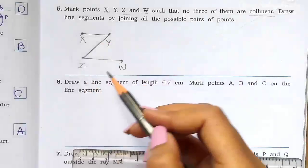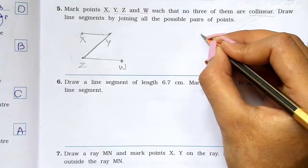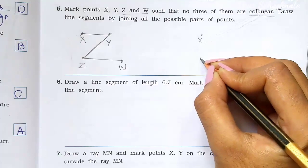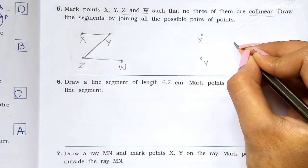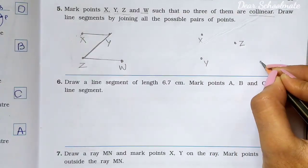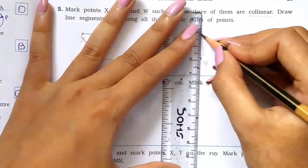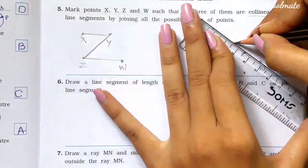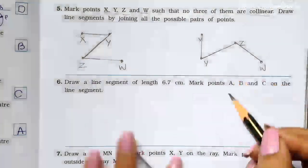Now we place the four points X, Y, Z, W and join them. This way we make all the possible line segments connecting the non-collinear points.